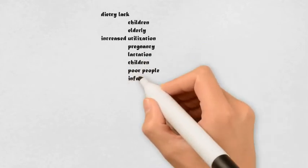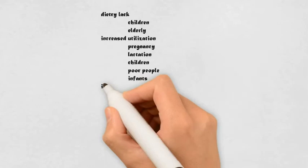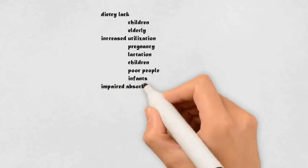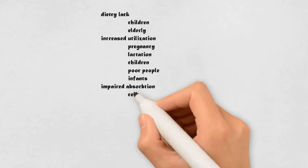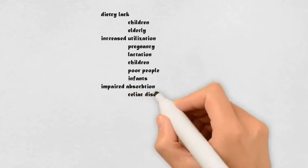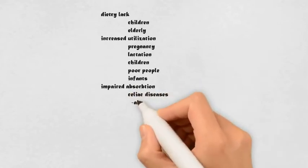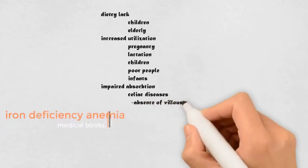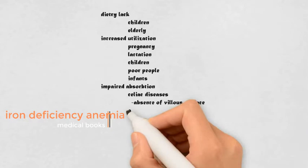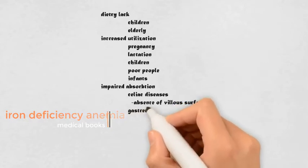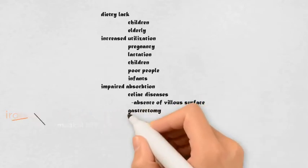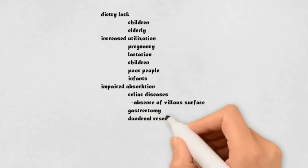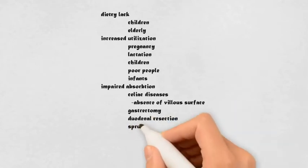Anemia can also occur due to impaired absorption — the person is taking iron but it is not absorbed. In celiac disease, the villous surface is absent, and the villous surface is important for absorption. In gastrectomy, HCl is reduced so iron is not reduced. In duodenal resection, the absorptive surface is reduced. In sprue, there is atrophic villous — again the villous is absent.